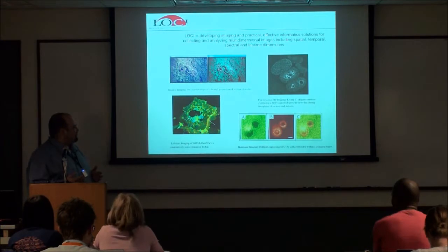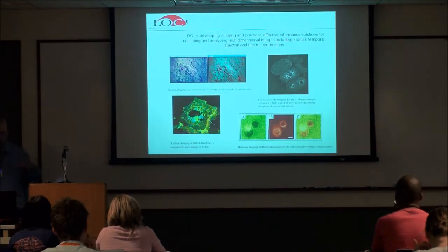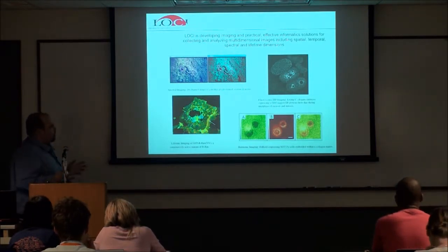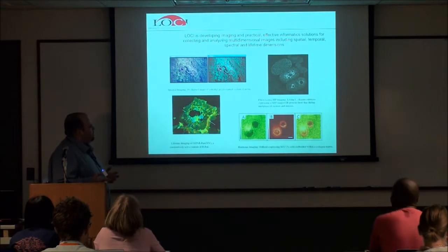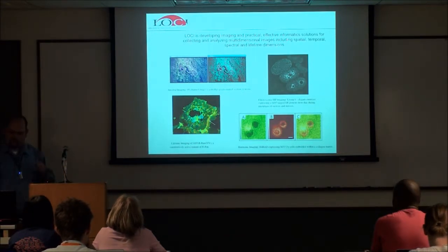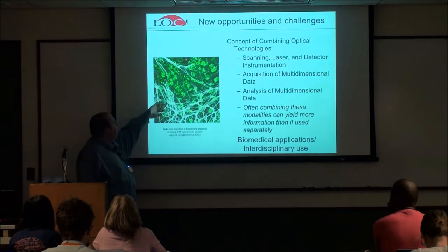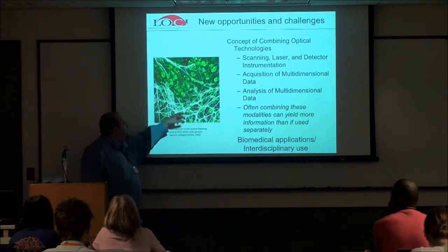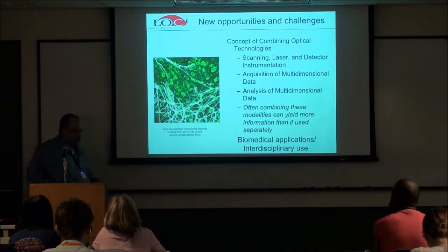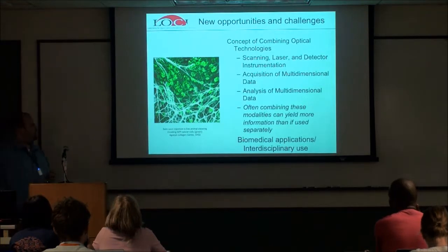Here's an example: cancer cells invading a matrix. The white fibers are collagen fibers. Because of collagen's centrosymmetric structure, it has harmonic properties we can exploit — it's not fluorescence but we can image it with our system and watch invading cells. The opportunities and challenges in informatics and quantitative imaging are that you can combine different techniques — scanning approaches, lasers, detectors — and combine them in new ways, yielding more information, but also potentially more frustration if you're not careful.